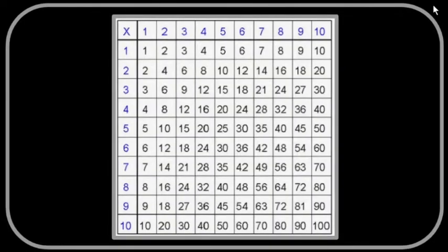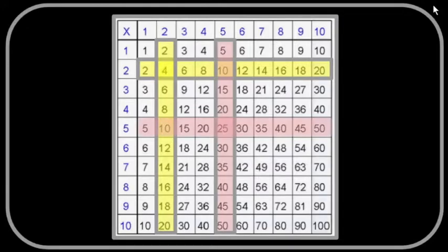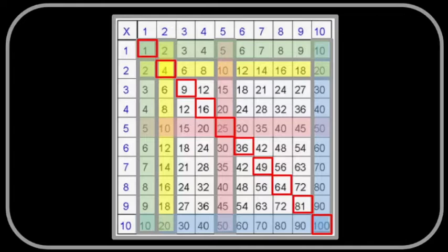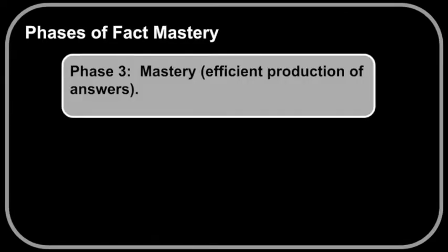If students master their 2's, 5's, and 10's, along with the 1's and squares, all other facts can be derived, which then leads to the final stage of mastery where students efficiently produce the answers.